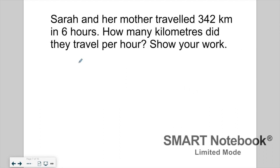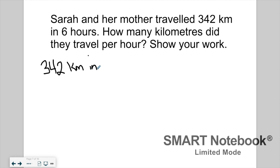This next rate is different because we're comparing distance to time. Sarah and her mother traveled 342 kilometers in six hours. How many kilometers did they travel per hour? Let's make our rate: 342 kilometers in six hours. Now I want to figure out how far she drove in one hour, so I need to divide 342 kilometers by six hours.